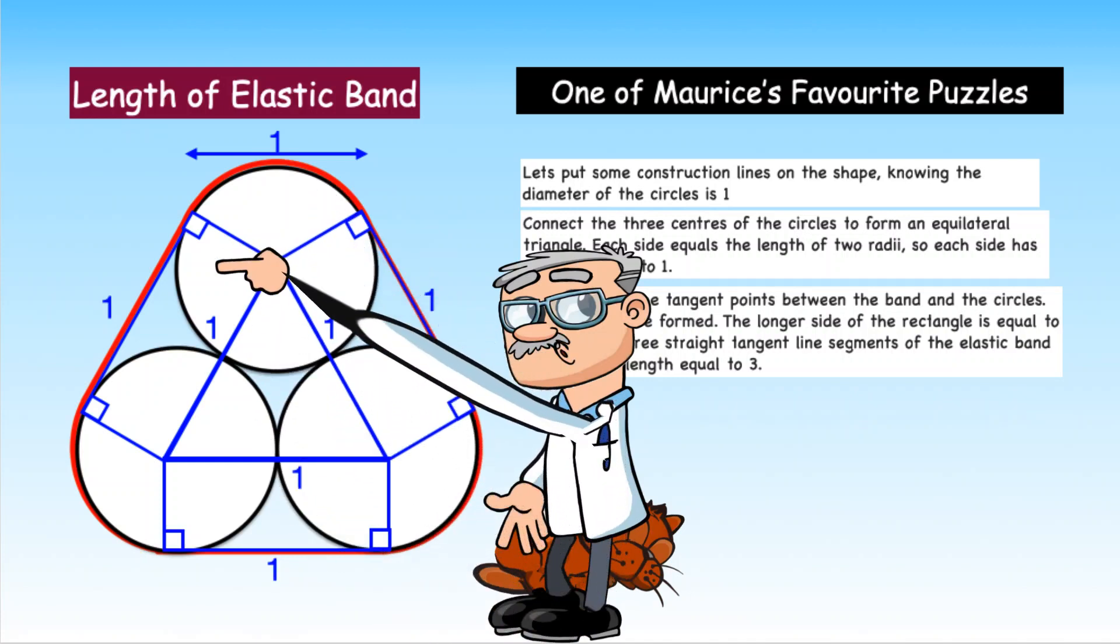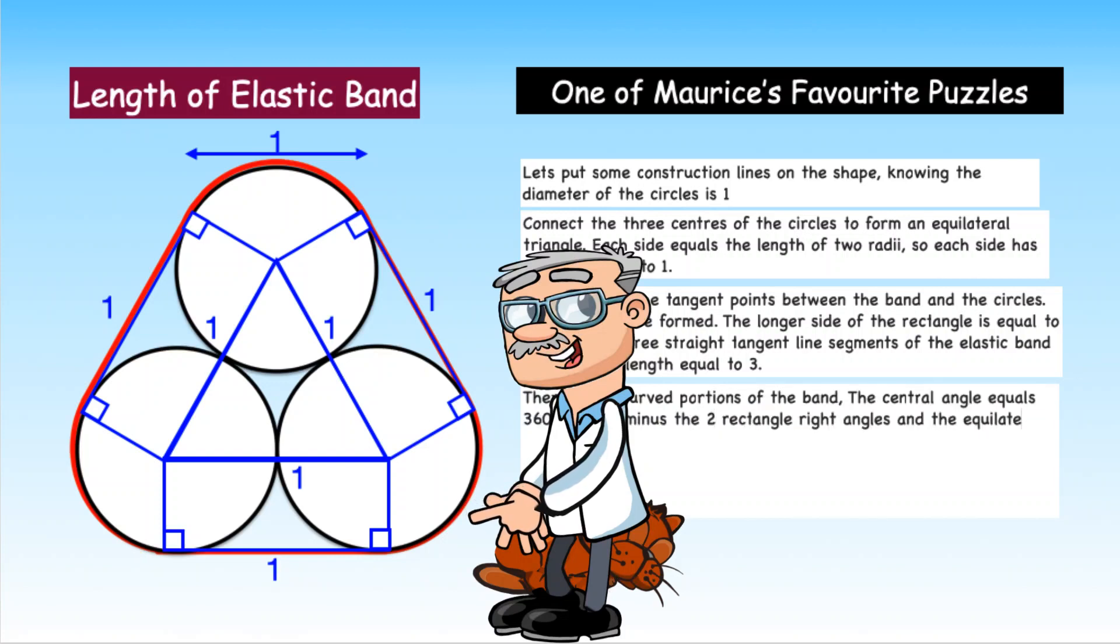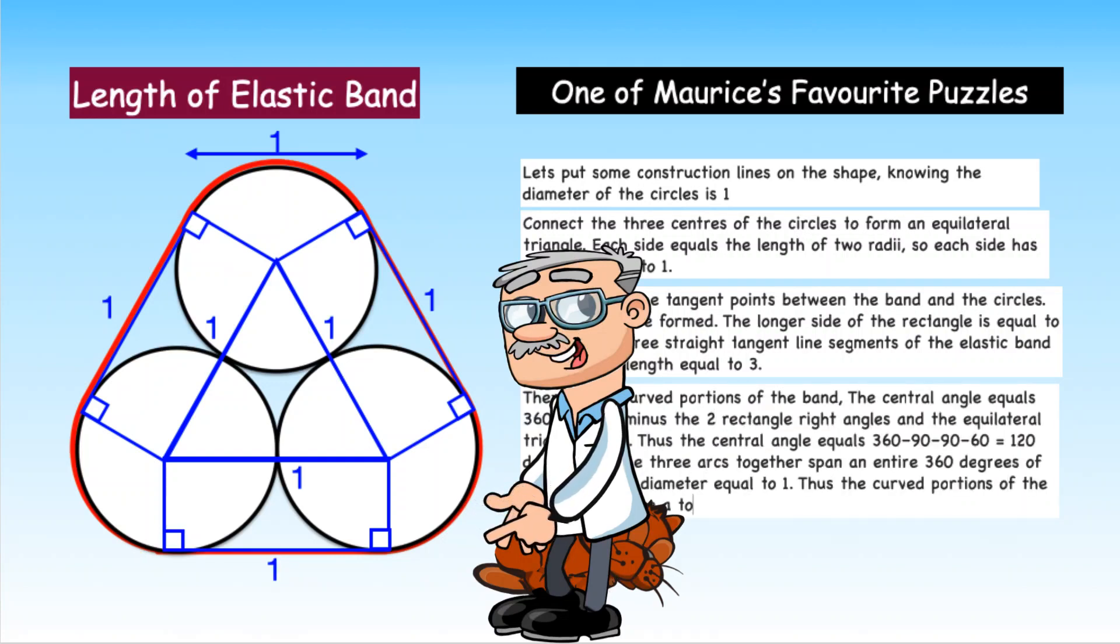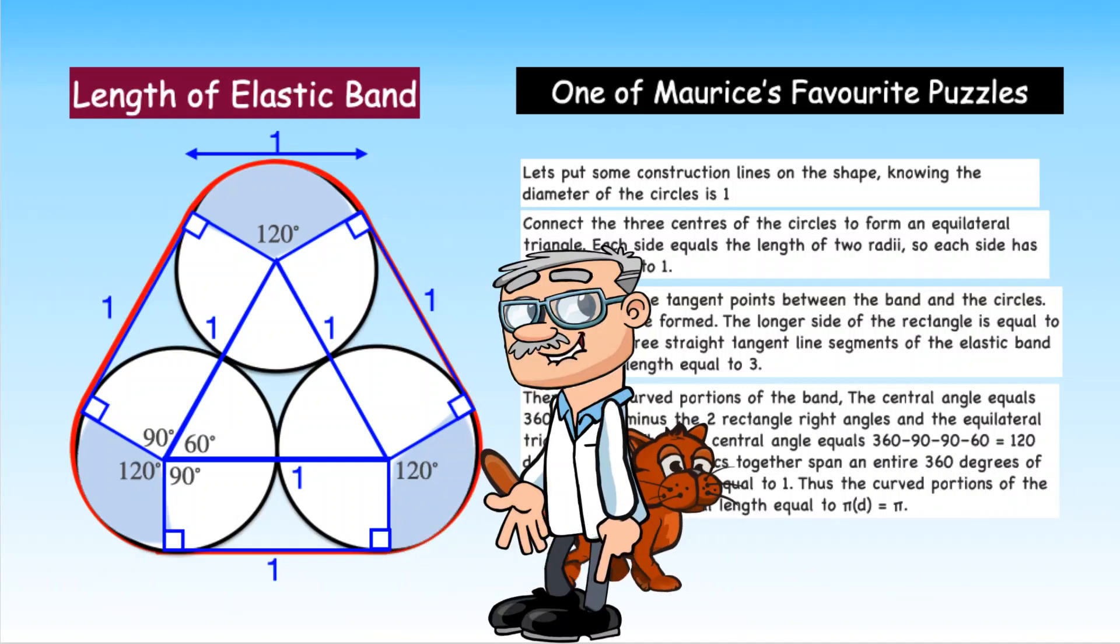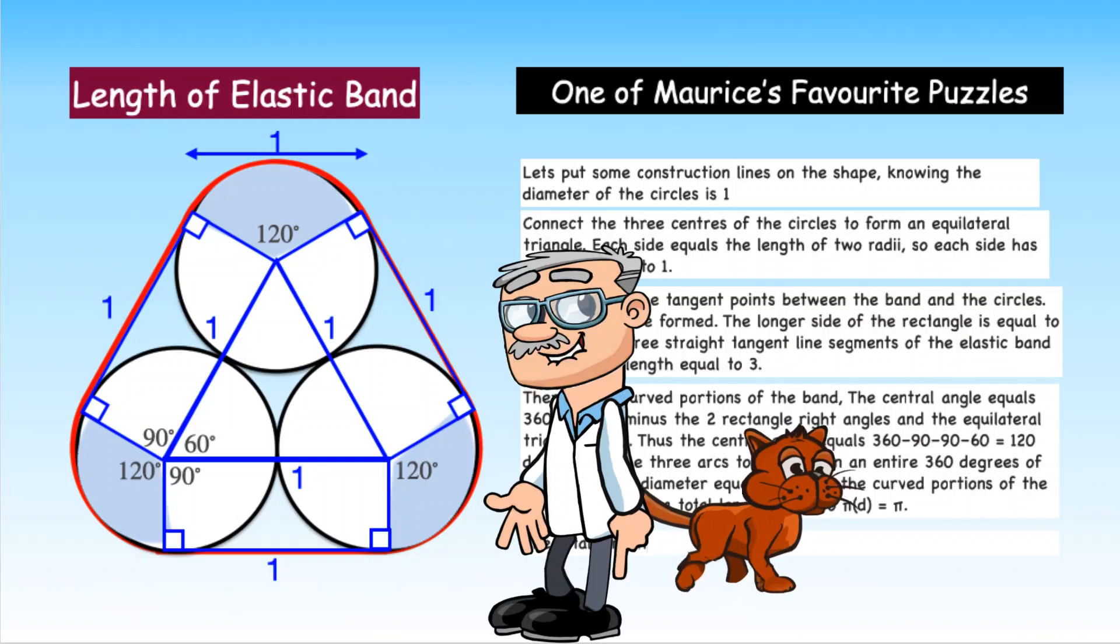There are three curved portions of the band. The central angle equals 360 degrees minus the two rectangle right angles and the equilateral triangle angle. Thus the central angle equals 360 minus 90 minus 90 minus 60 which equals 120 degrees.